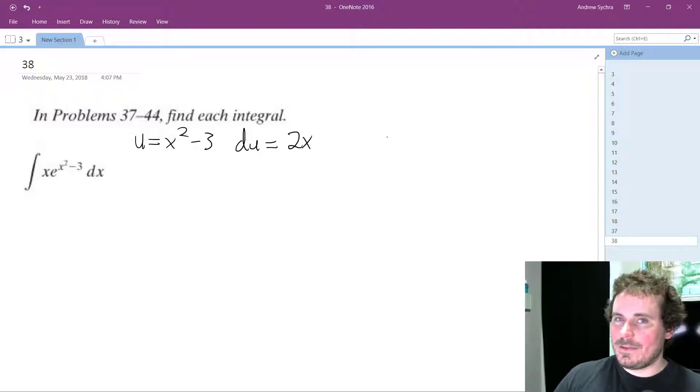And so to get du equal to dx, du is the equivalent of dx over x because we have to... I take that back, it's actually equal to dx over 2x because dx is equal to 1.